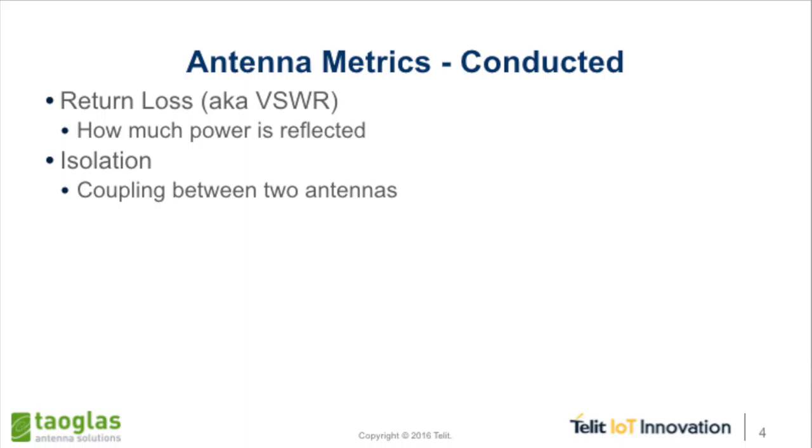These next metrics are conducted. We're going to be messing with the first one in the hands-on demo. Return loss is: of the energy that I put into the antenna, how much is reflected back out of the antenna, back at me. Whatever energy is reflected back is wasted — it's going nowhere useful. However, just because energy is going into the antenna doesn't mean it's being radiated in a useful way — it could be wasted as heat, or radiated in a direction that isn't helpful, and that's where the radiation pattern thing comes in.